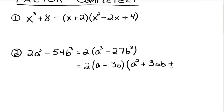Once you have the binomial, you can automatically get the trinomial. Take the first term of the binomial, a, and square it to get a squared. The sign of the middle term is opposite the sign of the binomial, so it's a plus. Multiply the two somethings, a and 3b, together to get 3ab. The sign of the last term is always positive, and to get the last term take the second something, 3b, and square it to get 9b squared. So the complete factorization of 2a cubed minus 54b cubed is 2 times a minus 3b times a squared plus 3ab plus 9b squared.